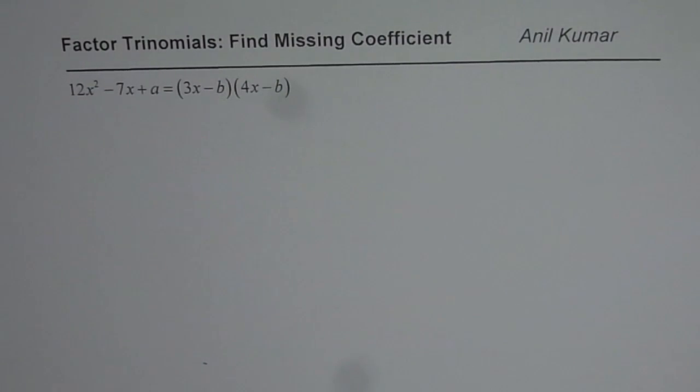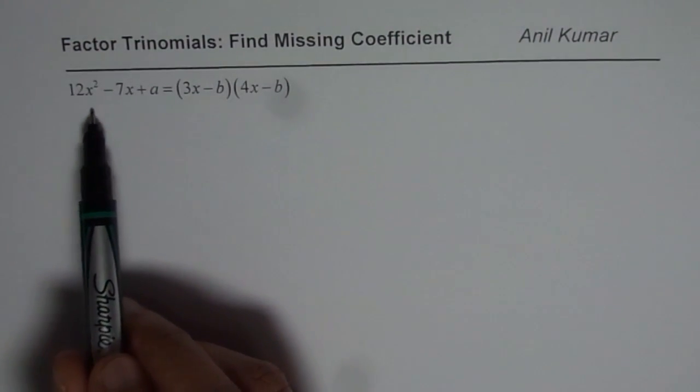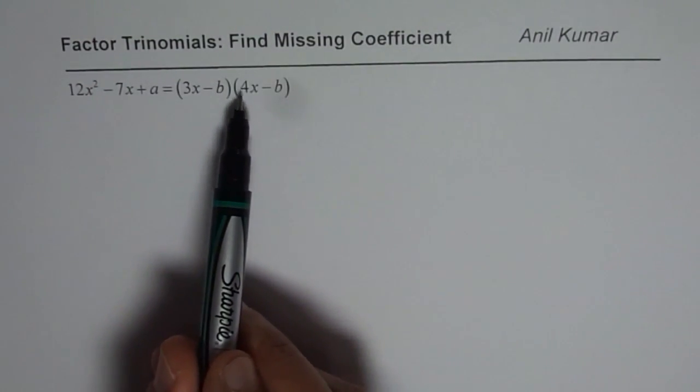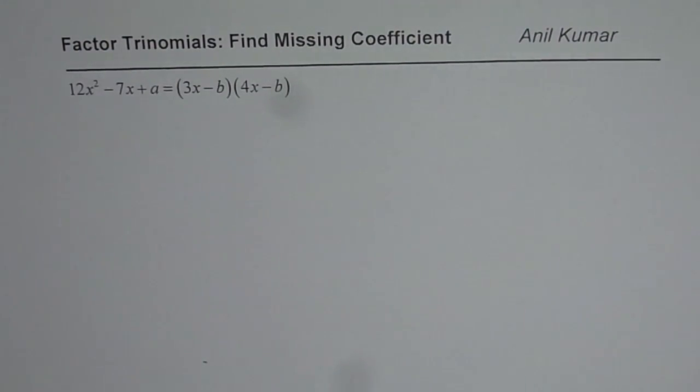I'm Anil Kumar sharing with you a test question on factoring trinomials. The question here is we need to find the missing coefficients. We are given 12x squared minus 7x plus a equals 3x minus b times 4x minus b.